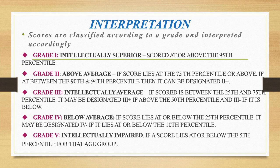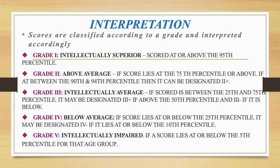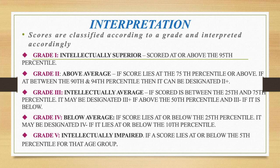Now let's learn the interpretation. Those who score at or above 95th percentile fall in Grade 1, intellectually superior range. Those whose score lies at 75th percentile or above, they would fall in Grade 2, above average range. If someone's score lies between 90th to 94th percentile, then it would be designated as Grade 2 plus.